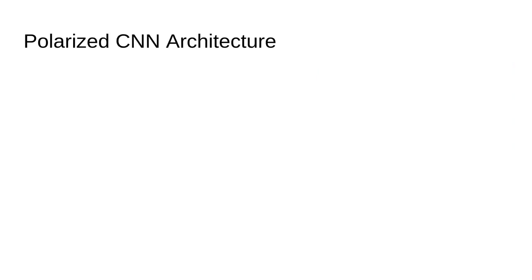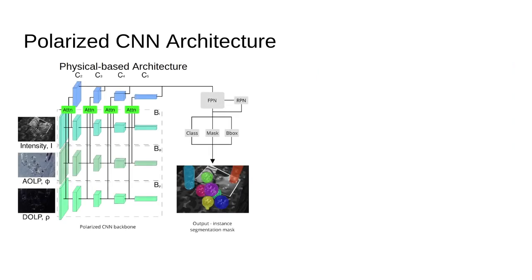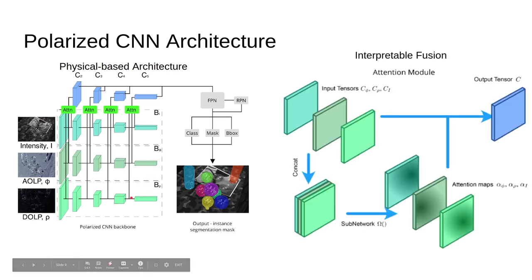Now let's talk about the architecture. So the first step of converting any deep network into a polarized CNN is using three input images instead of one and creating a multimodal fusion in the backbone. We then develop this novel attention fusion module, which creates an attention mask per input, allowing us to map inputs to outputs and interpret which inputs are being used for which outputs. This module can be applied to any multimodal fusion architecture, not just polarization. Finally, we do physically accurate data augmentations, because if you don't account for the physics, data augmentations will actually hurt performance.